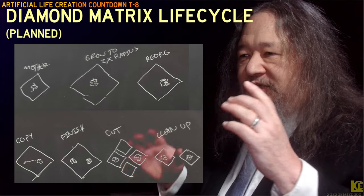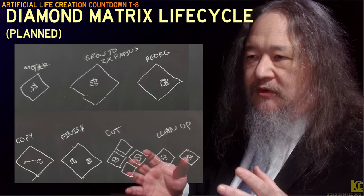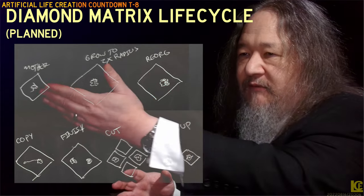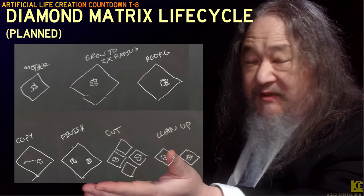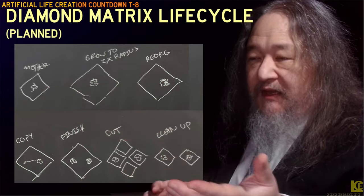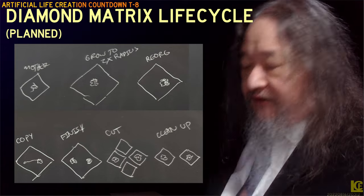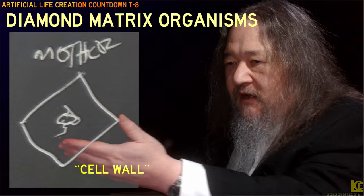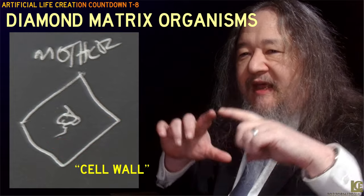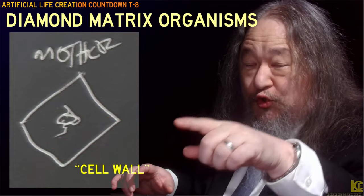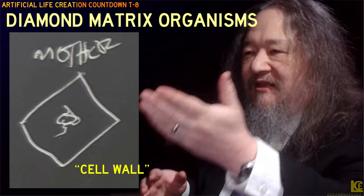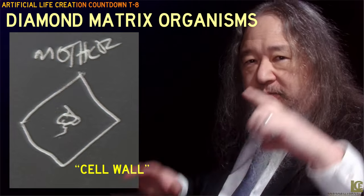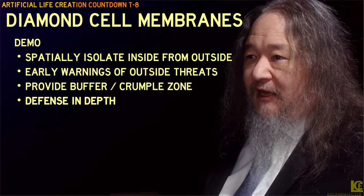So why do we care so much about cell borders? Once again, here is the overall global view of what we're trying to do: going from a mother to grow, reorganize, copy the genetic information, split, and have a mother and a daughter that can do the same thing. Right at the very beginning, we're talking about a discrete organism that has an edge that I drew a wall around. This is the cell wall — this is what we're trying to get done with the border around the diamond matrix.